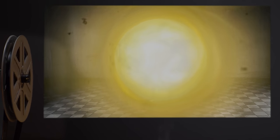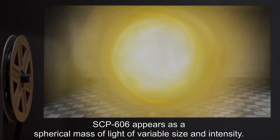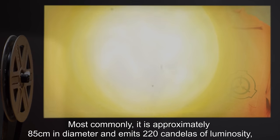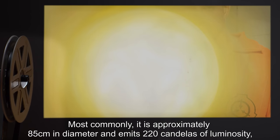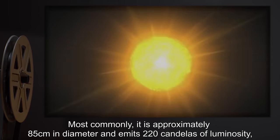Description. SCP-606 appears as a spherical mass of light of variable size and intensity. Most commonly, it is approximately 85 centimeters in diameter and emits 220 candelas of luminosity.